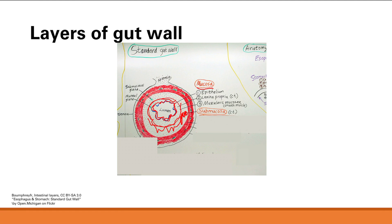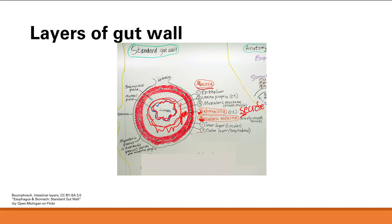As we go further out, we have the muscularis externa — that's smooth muscle — and this is doing all the contractility work. Its function is motility. The muscularis externa itself has two layers: an inner layer and an outer layer, and in between them is the myenteric plexus. Another name for that is the Auerbach plexus. These nerves help innervate the muscles and cause them to contract.